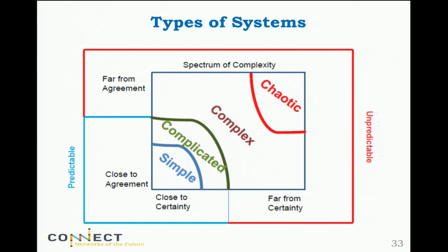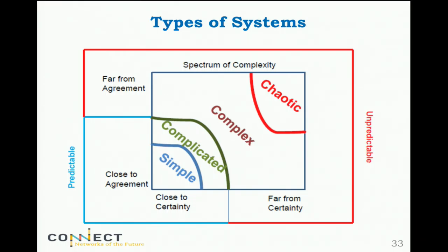You have an increase in degree of uncertainty going towards chaotic systems, and an increase in disagreement going towards chaotic systems. For simple systems there is not much argument — we kind of understand them. As you increase the complexity and at some point cross what is called the edge of chaos, there is much less agreement, and we really don't understand them.